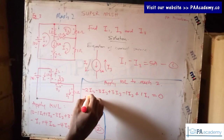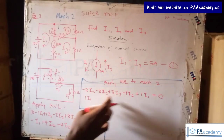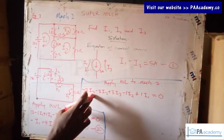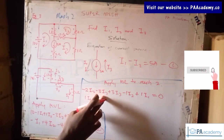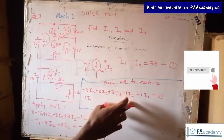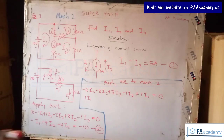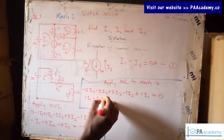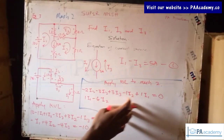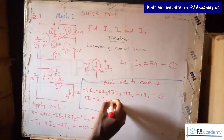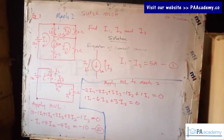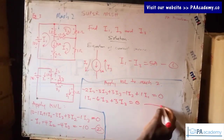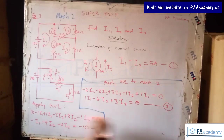Let's rearrange and simplify. For i1, we only have one i1. For i2, we have minus two minus three minus one, that's minus six i2. For i3, we have only plus three i3. So: i1 minus six i2 plus three i3 equals zero. This is equation three.